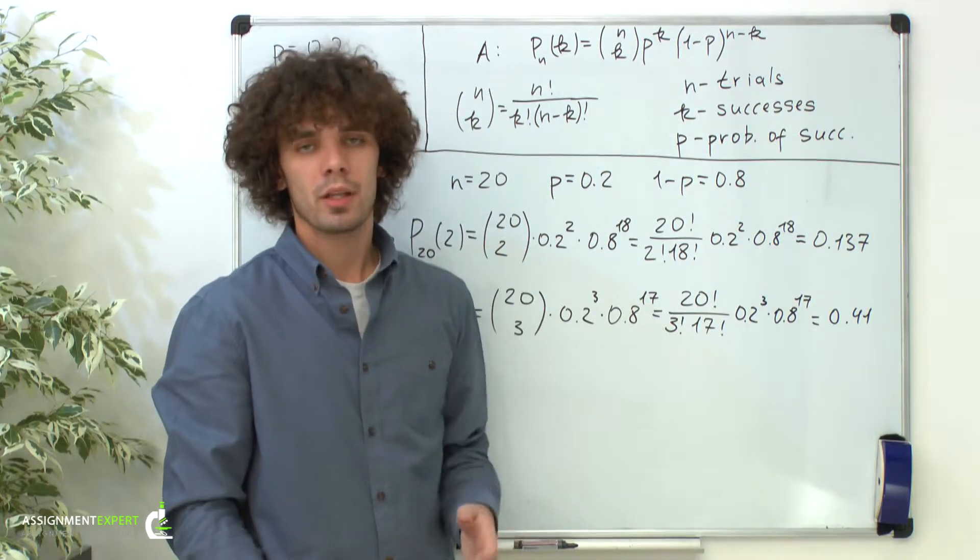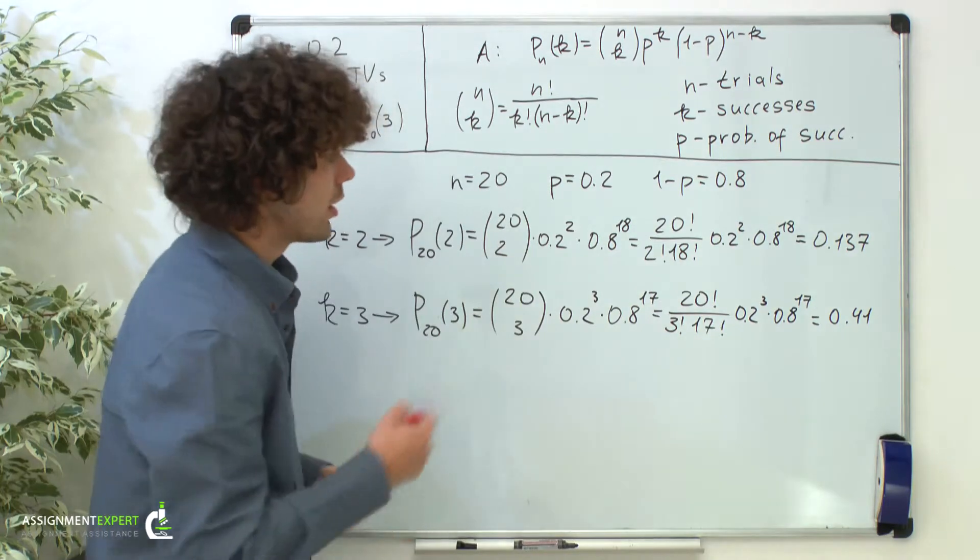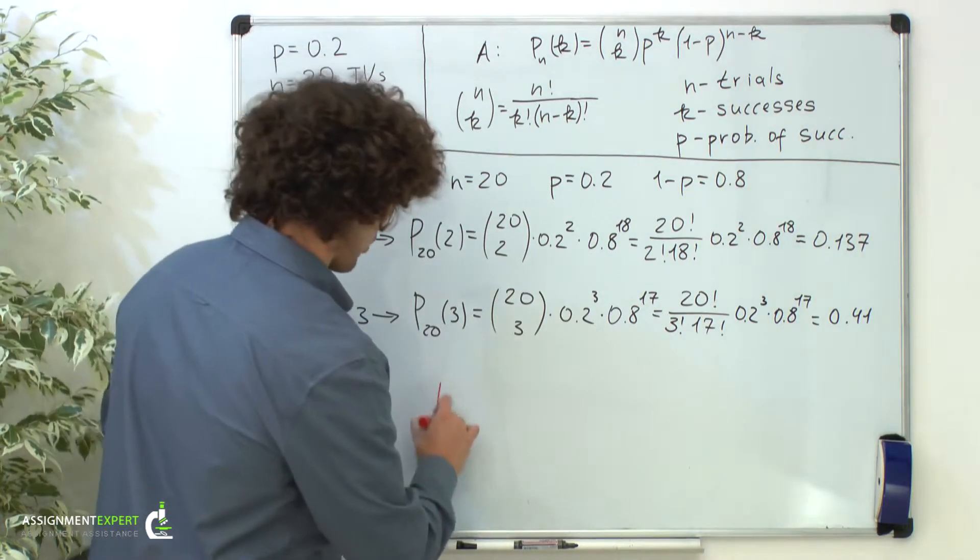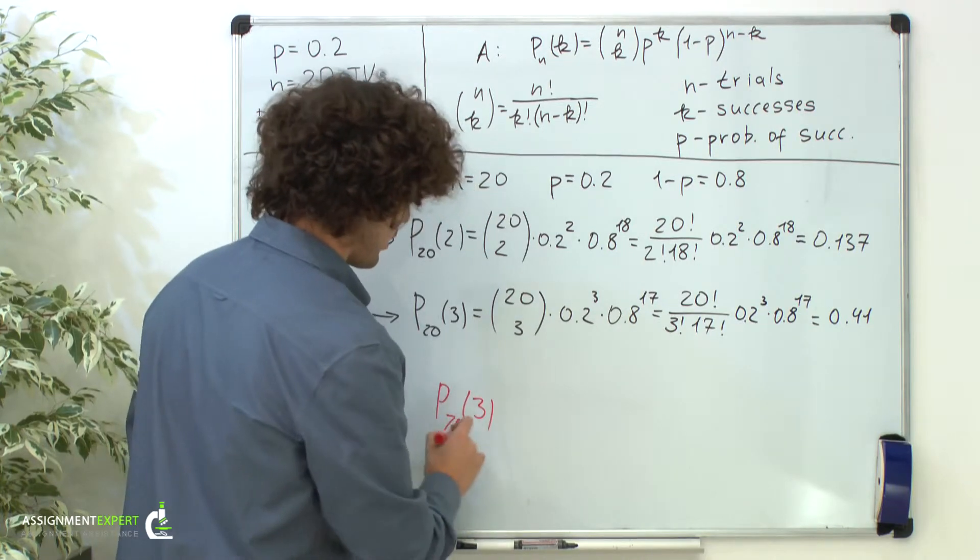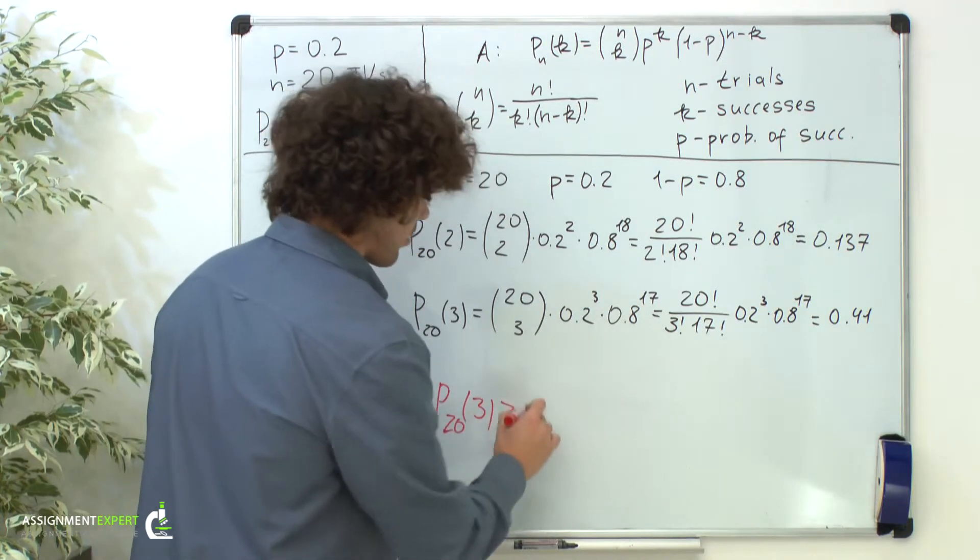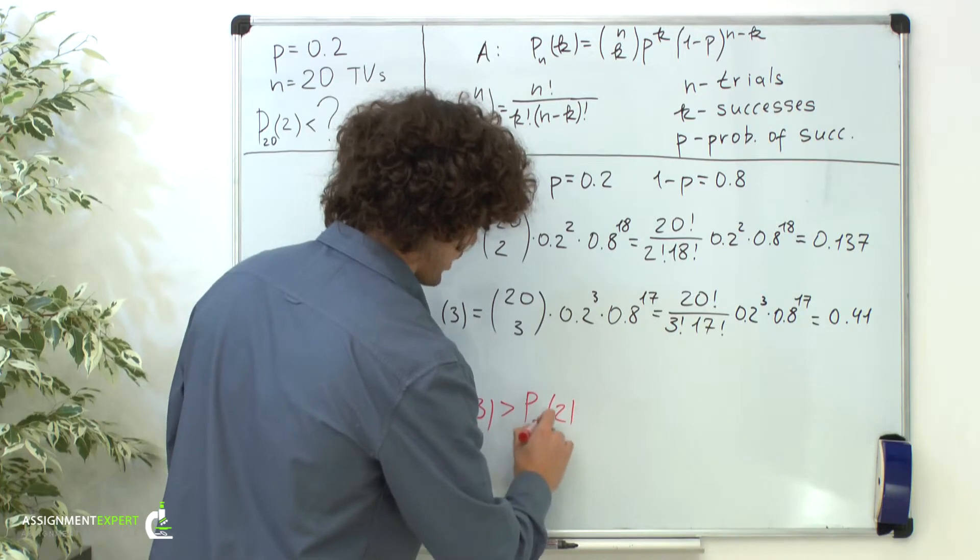So we obtained two probabilities. Let's compare them. Obviously the probability of getting three TVs with defects out of 20 is greater than the probability of two defective TVs in a set of 20.